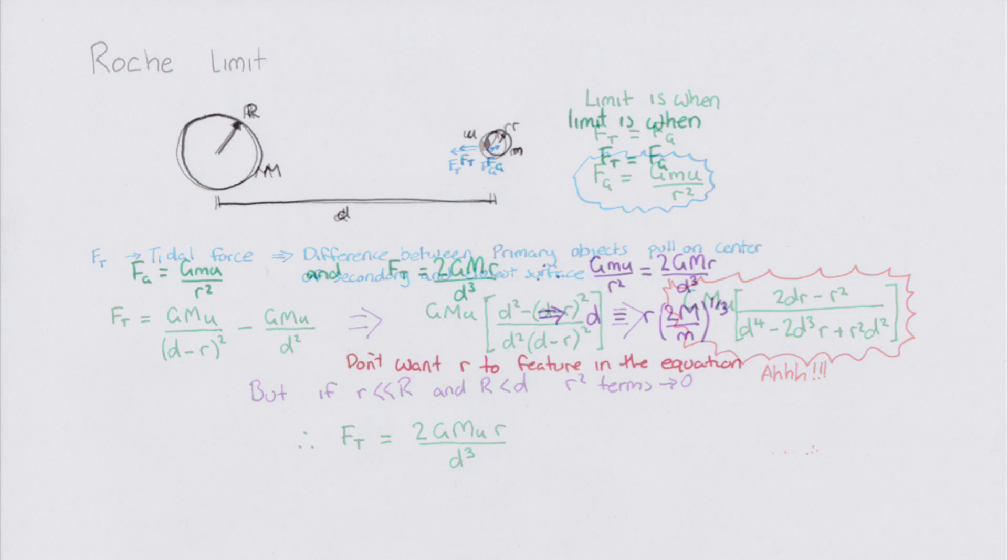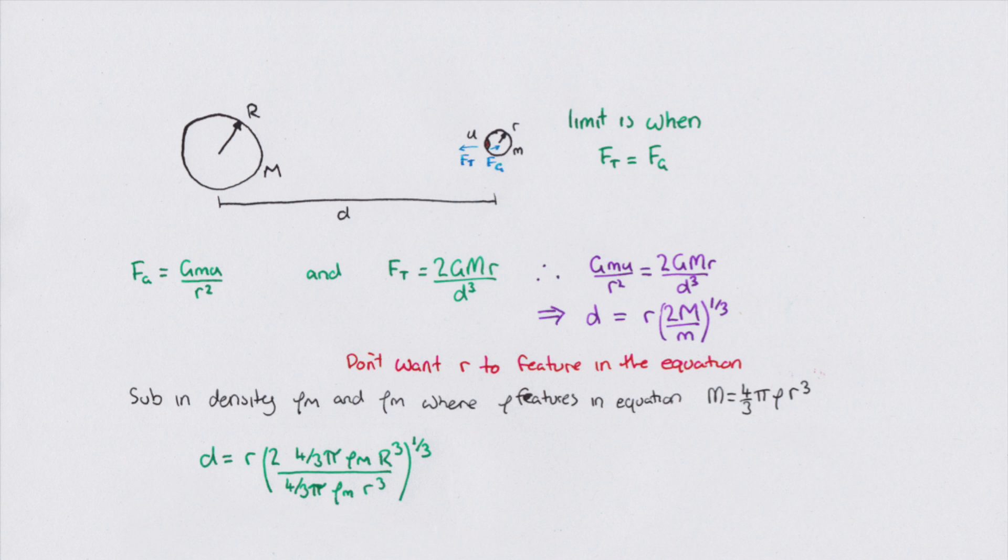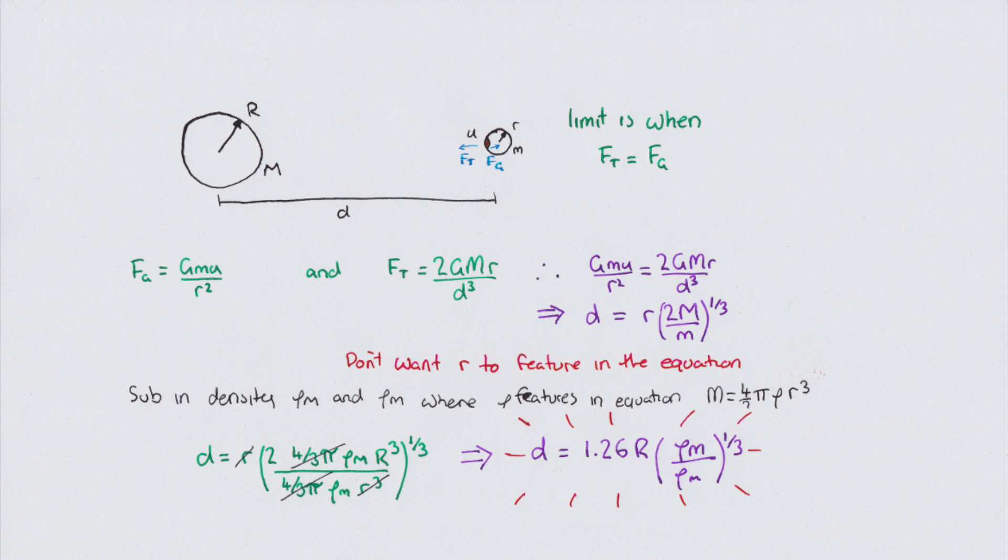Great. Now, let's get a new page and redraw our diagram, and write out all of our formulas. We now set Ft and Fg to equal to each other, and solve for D. This result, however, is a little bit problematic. We'd rather not require the secondary object's radius in the formula. Luckily, however, we can do a trick by substituting the mass of each object for the following equation, relating to radius and density. And once again, everything cancels out, and we get our final equation. D equals 1.26 times the radius times the cube root of the ratio of the density.